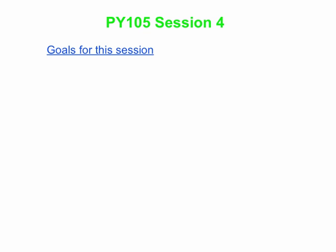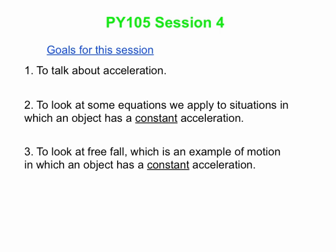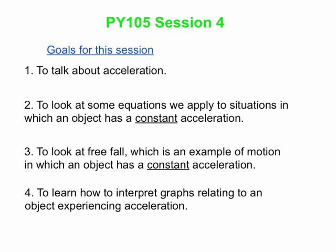This is PY105 Session 4. We have four goals for this session. First, we're going to start talking about acceleration. Second, we're going to look at some equations that we apply in situations where an object moves with a constant acceleration. To be specific, we're going to look at a free-fall situation, an example of motion in which an object has constant acceleration. And finally, we're going to learn how to interpret graphs relating to motion of an object experiencing acceleration.